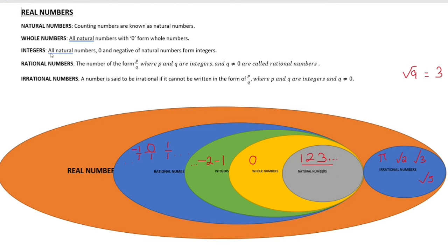Integers. Integers are natural numbers, 0, and negative natural numbers. Natural numbers, 0, and minus numbers — minus 1, minus 2 — are integers.